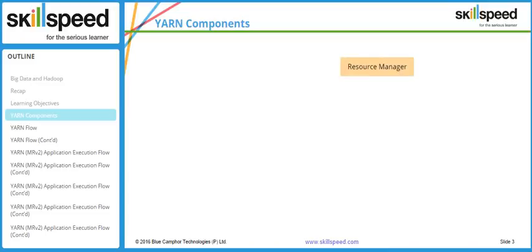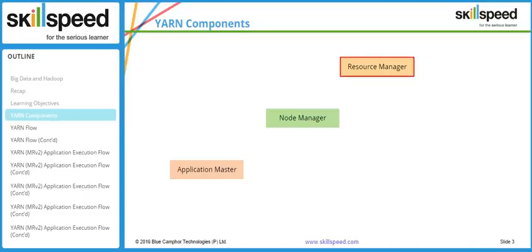The three main components of YARN are Resource Manager, Node Manager, and Application Master. The Resource Manager is a cluster-level daemon — usually you will have only one Resource Manager in a cluster, however you can have an active and standby setup. It runs on long-life, high-quality hardware, and since job execution is a key component, you cannot afford to have a failed Resource Manager.